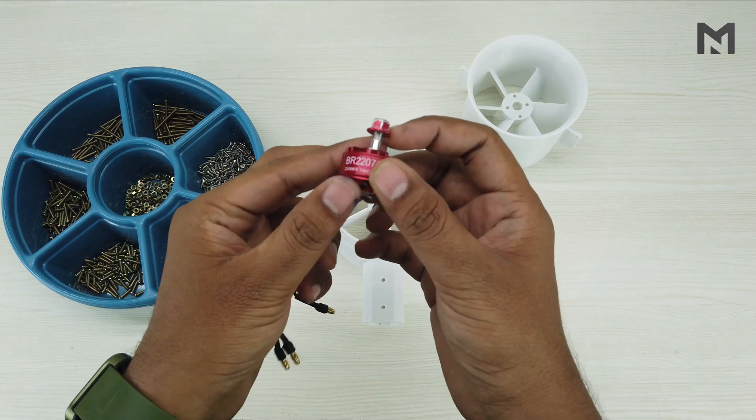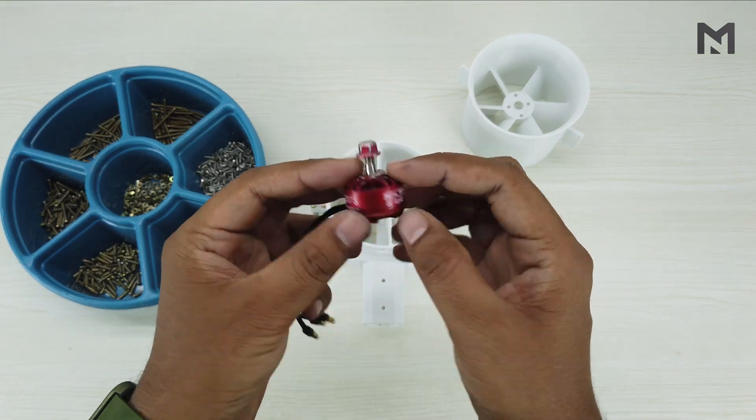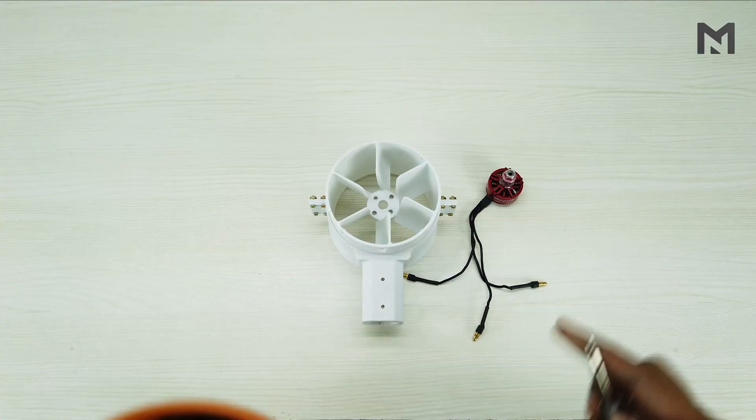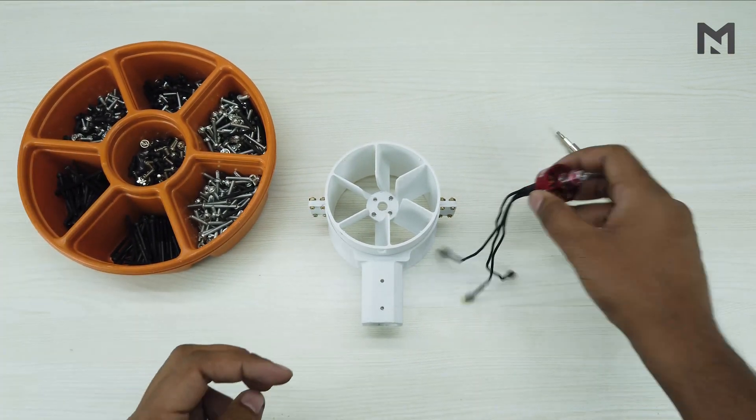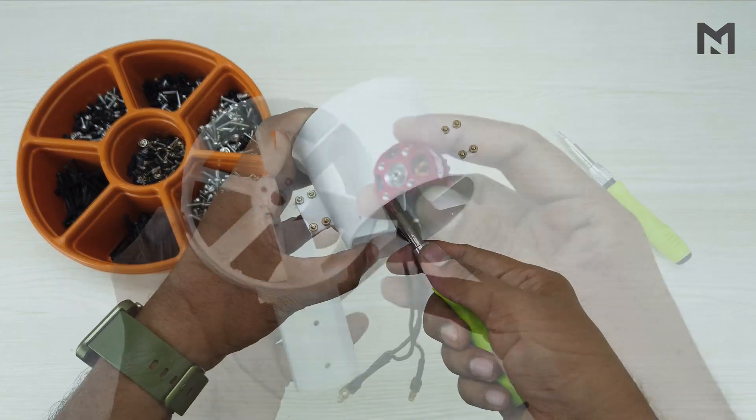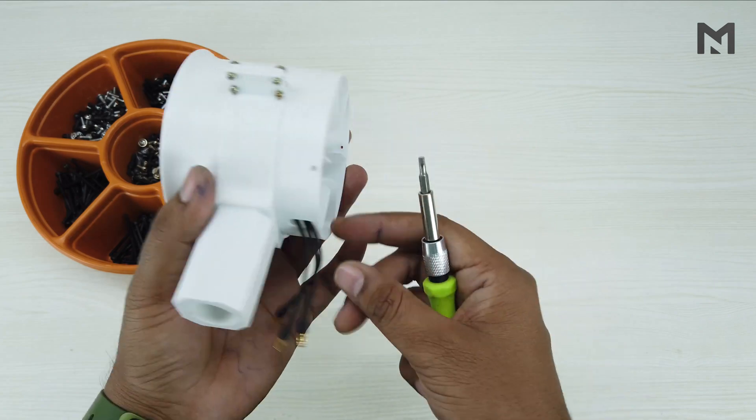I will be using this 2500kV motor which I used in my previous version too. Now we will attach the motor to the casing. Take the motor and the casing and align the screw holes. Then fix them with M3 screws of 8mm length.